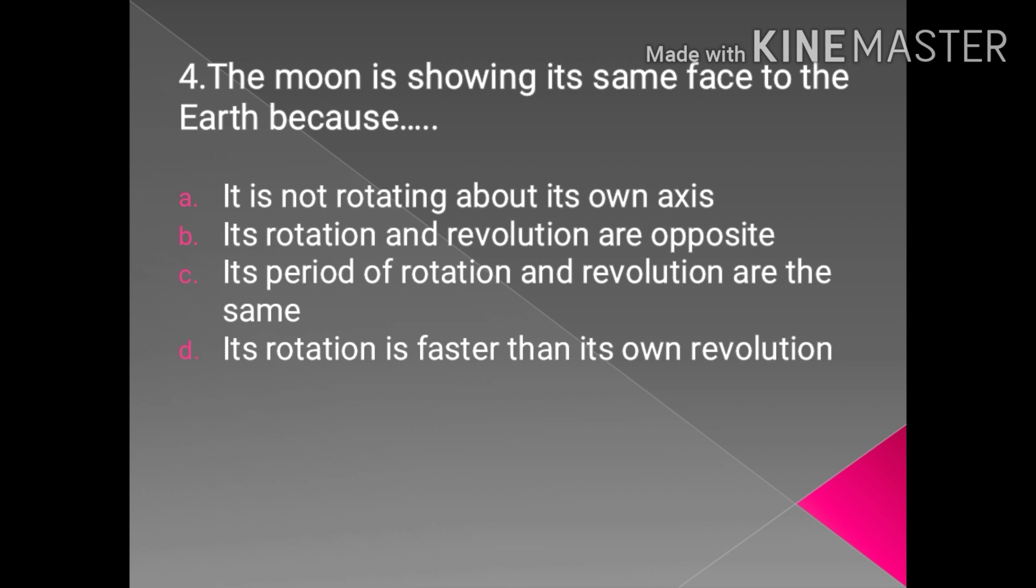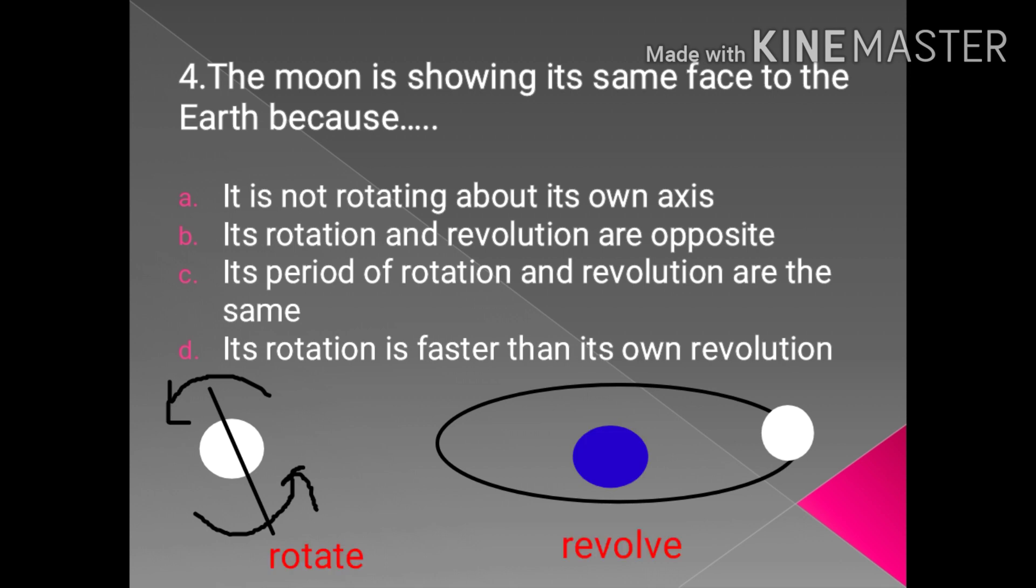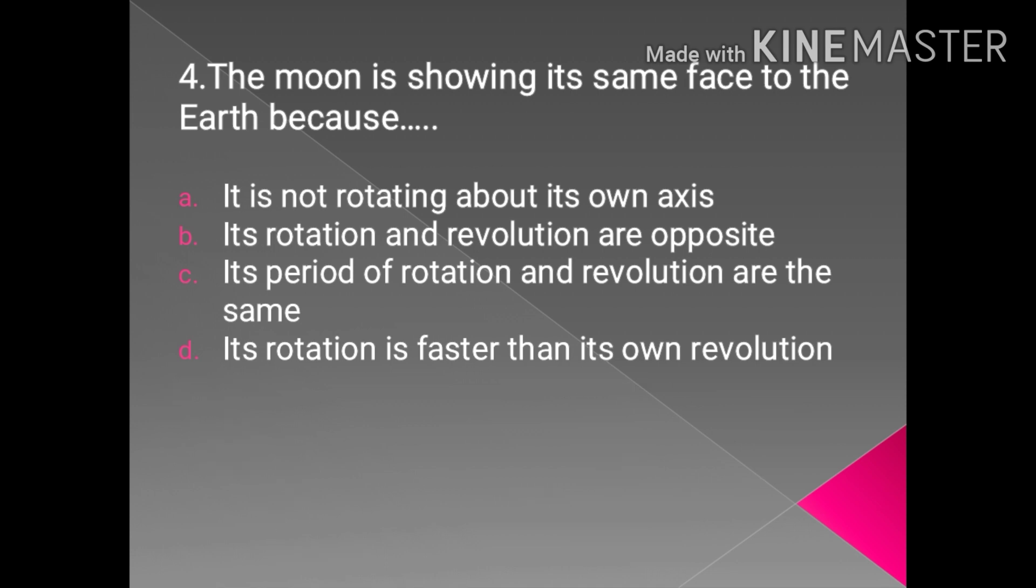The next question is: the moon is showing its same face to the Earth because the correct option is its period of rotation and revolution are same. Why is it so? It is so because its rate of spin is tidally locked, so that is synchronized.